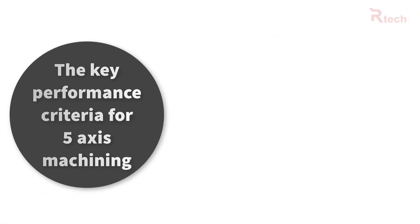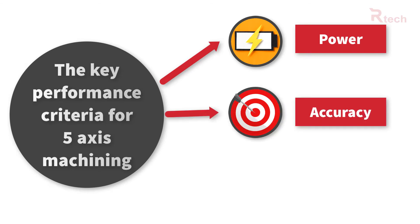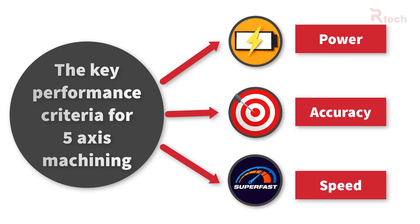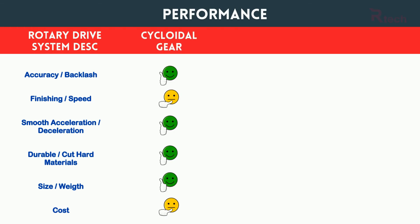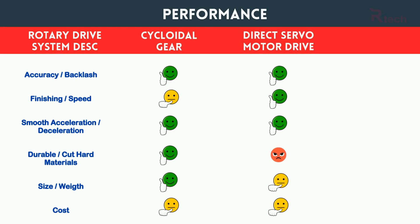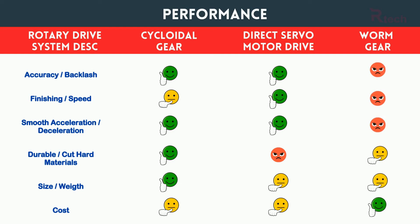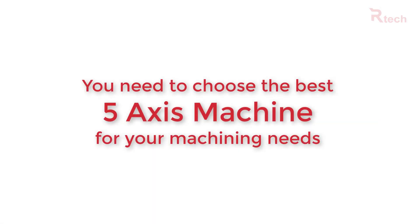The key performance criteria for rotary tables are power, accuracy, and speed. These will help you machine your workpieces accurately and efficiently, even on hard materials. As you can see on the table shown, different rotary transmission systems have their own strengths and weaknesses. You should know from your supplier what type of rotary transmission system your five-axis machine has, now that you know what performance you can expect. Smart decision makers need to make the choice that is most flexible, that they can use to accept many different types of jobs and more business opportunities. Remember that five-axis machines are an investment for the long term.